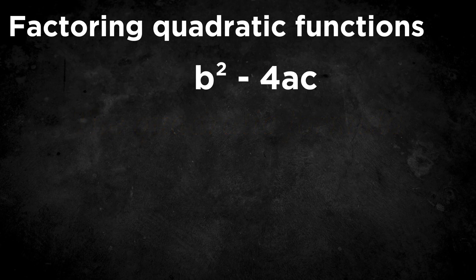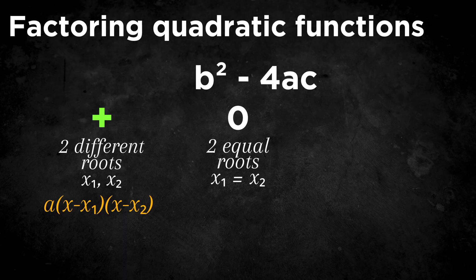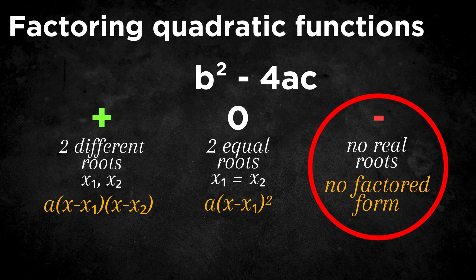If the expression under the square root is positive, the polynomial has two real roots, which means it can be factored into two linear factors. If the expression under the square root is 0, there are two solutions but they are the same, and we can write it as the square of a linear factor, because we have the same factor two times. However, if the expression under the square root is negative, there are no real roots, and the quadratic cannot be factored over the real numbers. In that case, we write it as an irreducible quadratic factor.